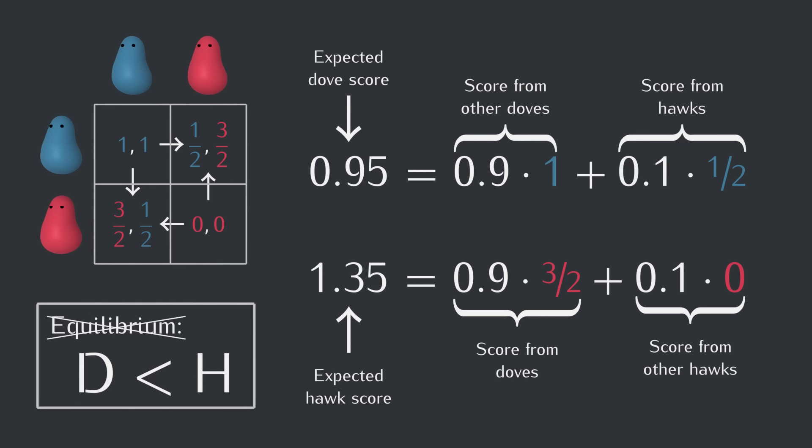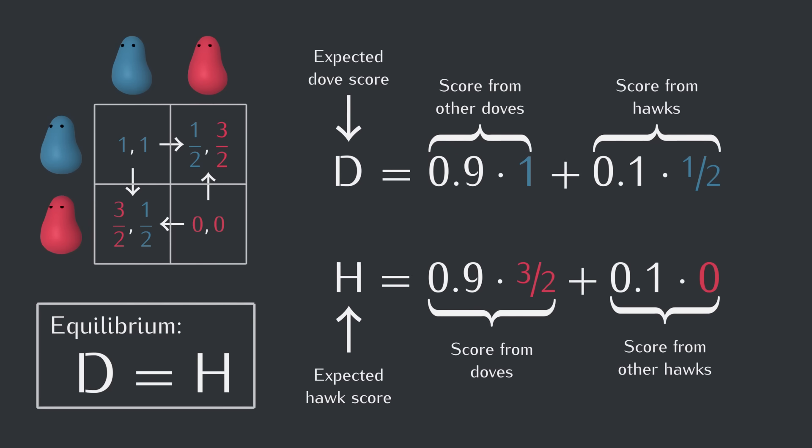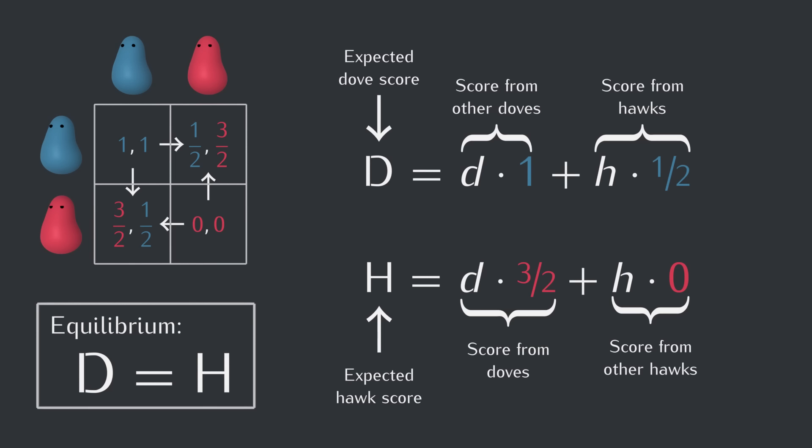Now to find out what fraction of doves does meet the equilibrium condition, we can write the fractions of doves and hawks as variables instead of just guessing at specific numbers. And you might be saying right now, wow, that's a lot of letters, which is a fair point, but we're almost there, and our next step is actually to get rid of one of those letters, so there's a nice treat already.